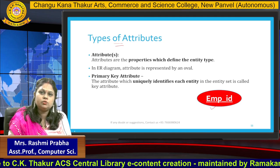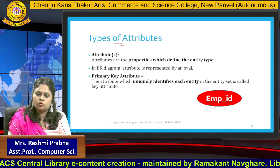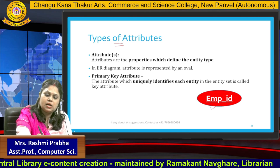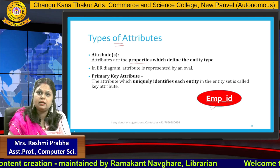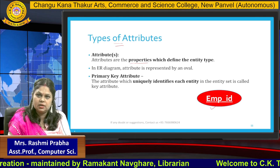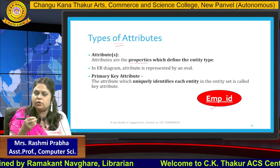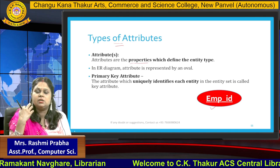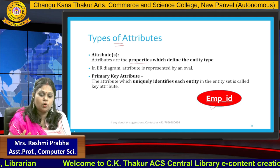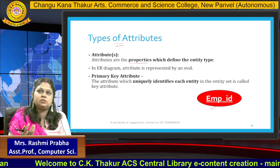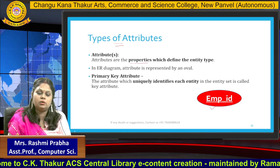Employee ID is uniquely used to represent each and every employee in an organization. Attributes are the properties which define the entity type. For example, you can see the pen in my hand and the mic at my ear — these are all things connected to me while making this video. These are all properties which are used to identify what is going on currently.